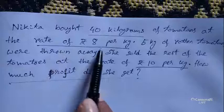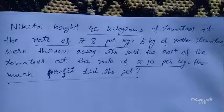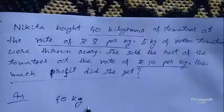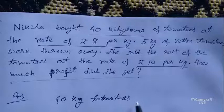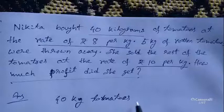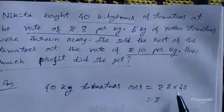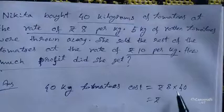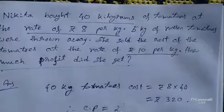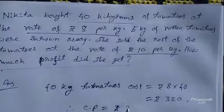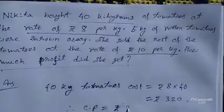40 kg tomatoes cost rupees 8 into 40, which equals rupees 320. This is the cost price, because she is buying these tomatoes for rupees 320. Now, 5 kg of rotten tomatoes were thrown away, so the remaining tomatoes are 40 kg minus 5 kg, which equals 35 kg.